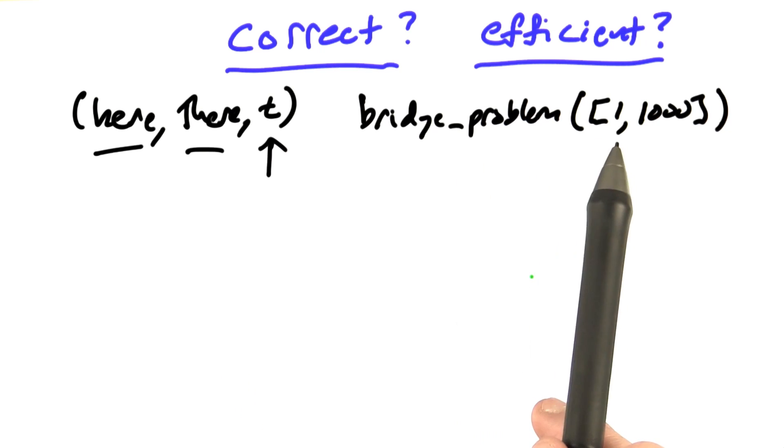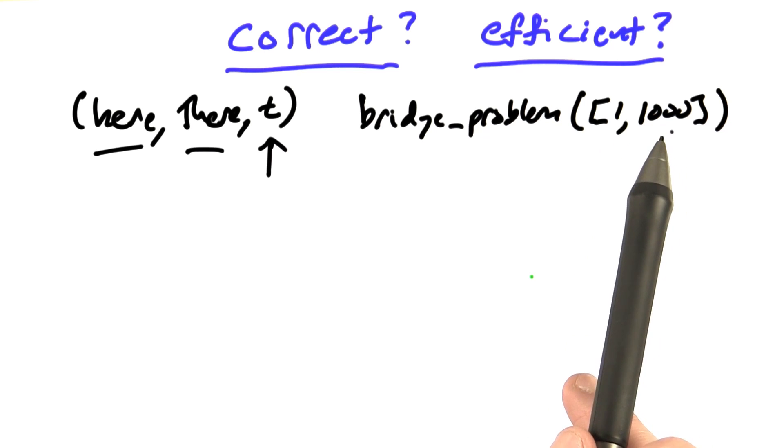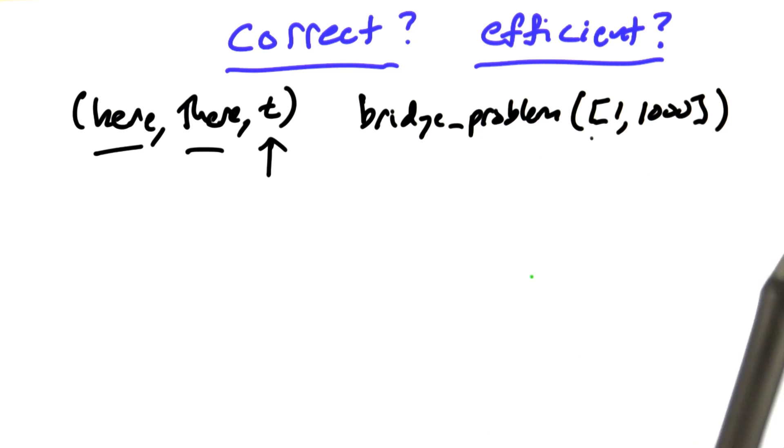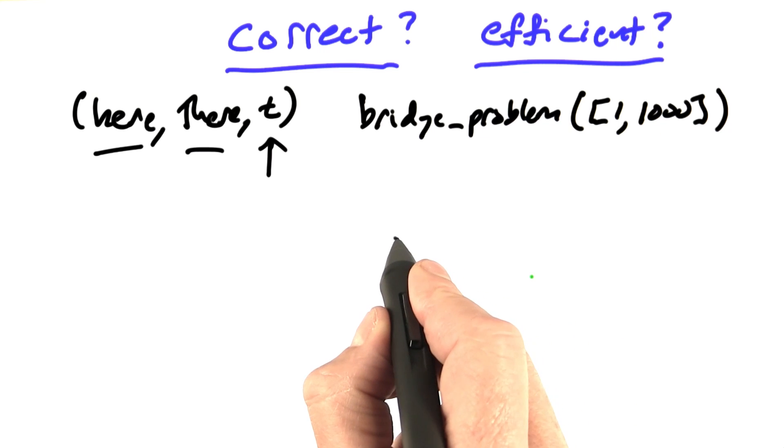Consider this problem. We have two people, one who takes one unit to cross the bridge and one who takes 1,000. Now, it seems pretty clear there's an easy solution. The two of them go across together and it takes 1,000. But look how we're going to explore this space.